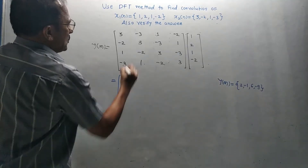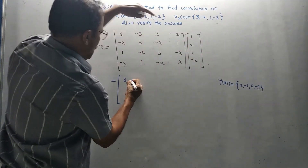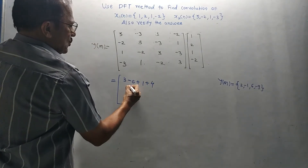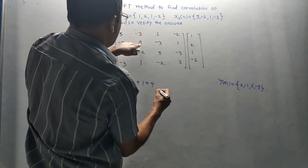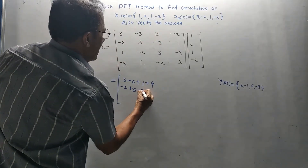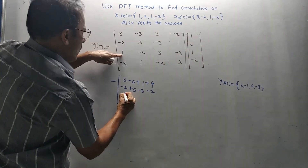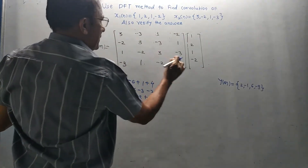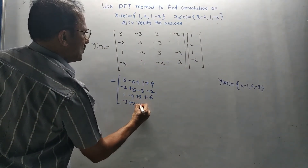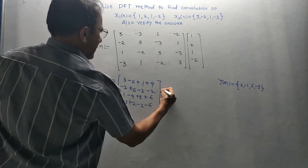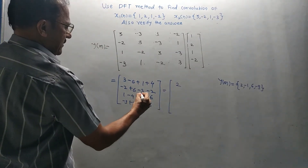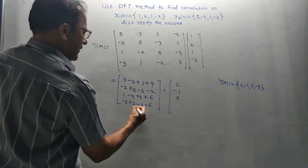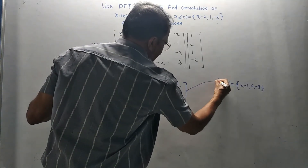Performing the matrix multiplication row by row: first row: 3×1 + (−3)×2 + 1×1 + (−2)×(−2) = 3−6+1+4 = 2. Second row: (−2)×1 + 3×2 + (−3)×1 + 1×(−2) = −2+6−3−2 = −1. Third row: 1×1 + (−2)×2 + 3×1 + (−3)×(−2) = 1−4+3+6 = 6. Last row: (−3)×1 + 1×2 + (−2)×1 + 3×(−2) = −3+2−2−6+... = −9. The answer Y(M) = {2, −1, 6, −9} matches.